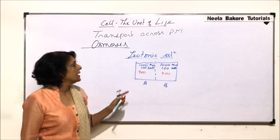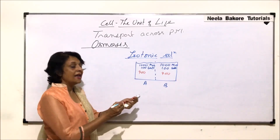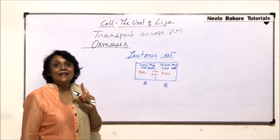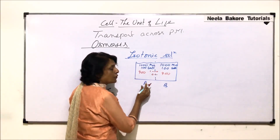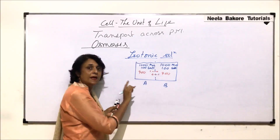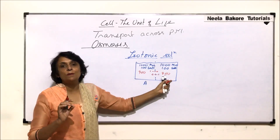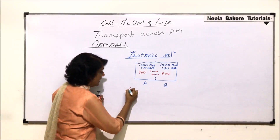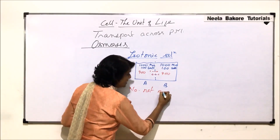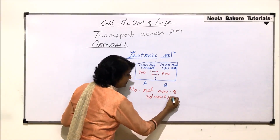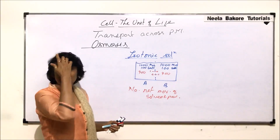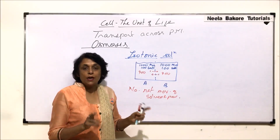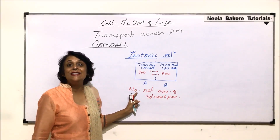Such solutions are called isotonic. In this situation, water molecules move from one place to another, but the number is the same — if one molecule goes from A to B, one comes from B to A. There is no net movement of solvent particles. Net movement would result in a change in concentration, but here movement occurs in equal proportion.